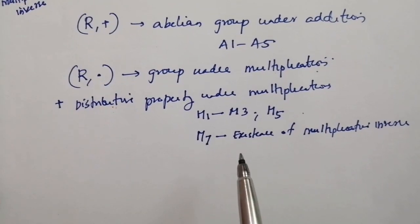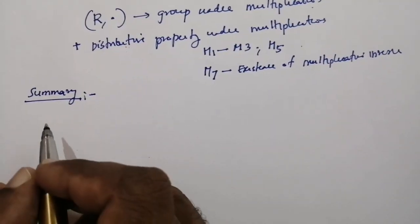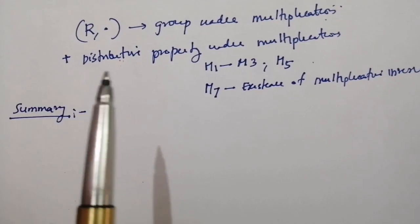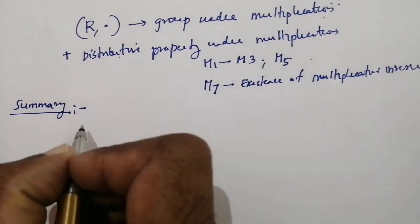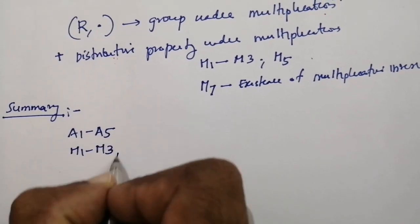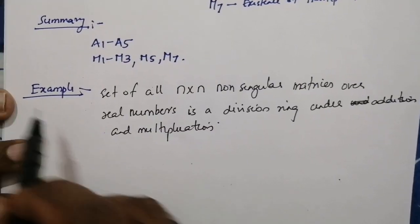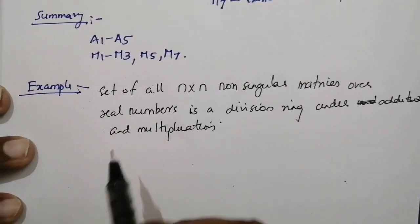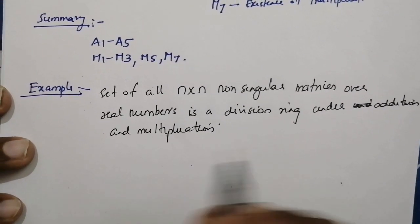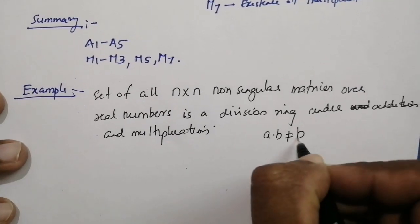In summary, every non-zero element has a multiplicative inverse under multiplication. A division ring is a ring with identity in which every non-zero element has a multiplicative inverse — satisfying A1 to A5, M1 to M3, M5 and M7. For example, the set of all n×n non-singular matrices over real numbers is a division ring under addition and multiplication, and under multiplication it will not satisfy the commutative property — that is, A·B ≠ B·A.